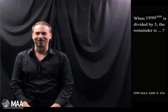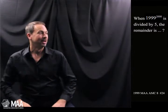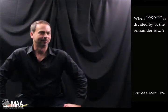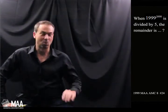G'day! Welcome to another Curriculum Burst. This time let's do a grade 8 problem that goes as follows. When 1999 to the 2,000th power is divided by 5, the remainder is what?